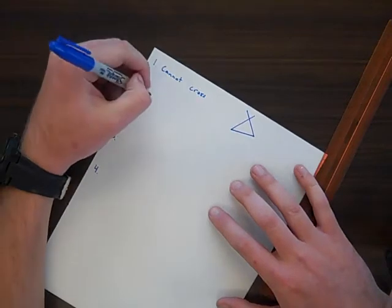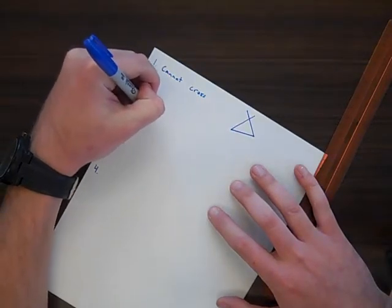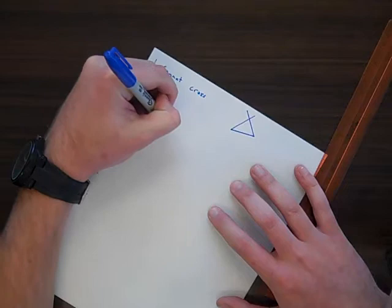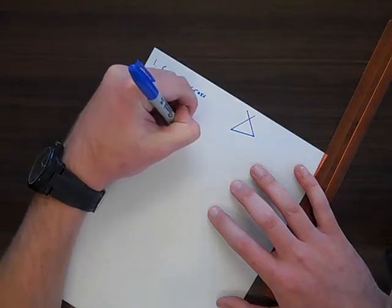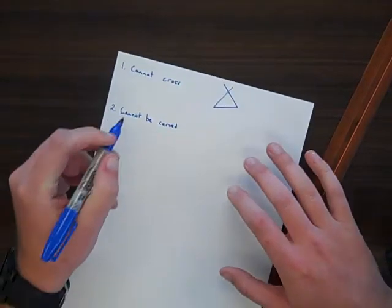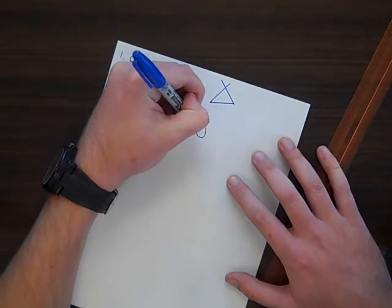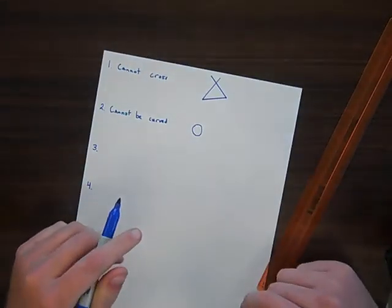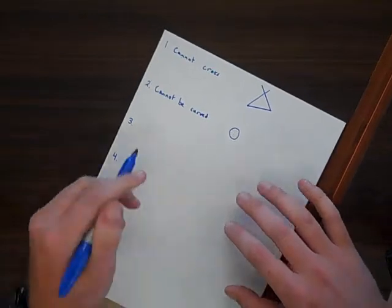Step number two, lines cannot be curved. Simply put, a circle is not a polygon. Again, it cannot have any curved lines. We are doing straight lines.